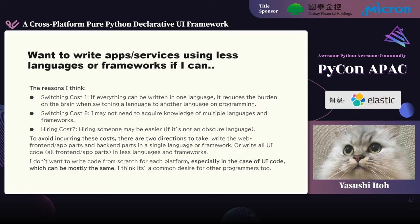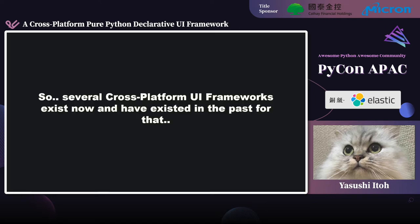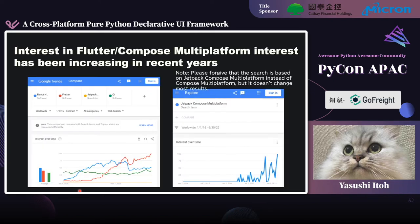I don't want to write code from scratch for each platform, especially in the case of UI code which can be mostly the same. I think it's a common desire for other programmers too. So several cross-platform UI frameworks exist now and have existed in the past for that. I just looked up four famous frameworks that came to mind as cross-platform UI frameworks using Google Trends. The four frameworks are React Native, Flutter, Compose Multiplatform, and Qt.